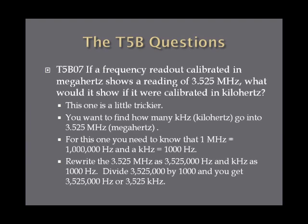If a frequency readout calibrated in megahertz shows a reading of 3.525 megahertz, what would it show if calibrated in kilohertz? This one is a bit trickier. 1 megahertz equals 1 million hertz, and 1 kilohertz equals 1,000 hertz. Rewrite 3.525 megahertz as 3,525,000 hertz, then divide by 1,000 to get 3,525 kilohertz.